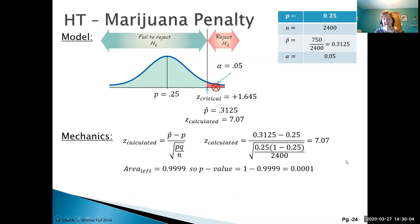The second part of our mechanics is to figure out the p-value. For a right-tail test, the p-value is the area to the right of our Z calculated. The area to the left of 7.07 is 0.9999, so our p-value is 1 minus 0.9999, or 0.0001.